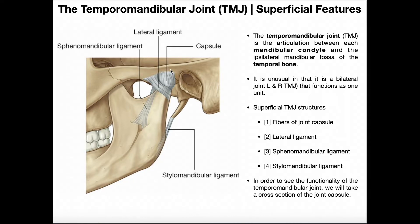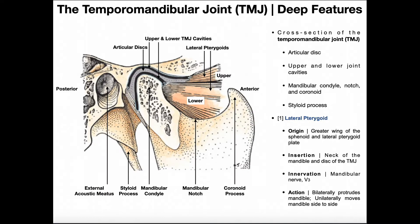These are our superficial TMJ structures. Now let's look at another image. This image is reversed — on the right side of the image is actually the anterior side, and on the left side is posterior. The TMJ itself has been given a sagittal section so we can see inside the joint capsule. The anterior projection on the superior surface of the mandible is the coronoid process.